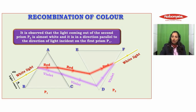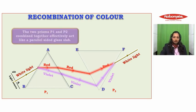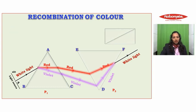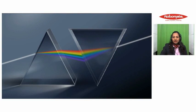The two prisms P1 and P2 combined together effectively act like a parallel-sided glass slab. It can be seen in this picture that white light, which was spread into its spectrum of seven constituent colors, was made to fall on the second prism and was recombined back to white light.